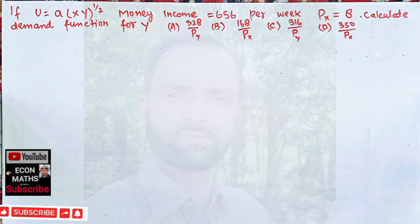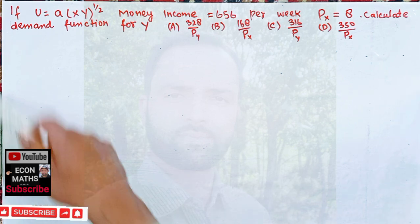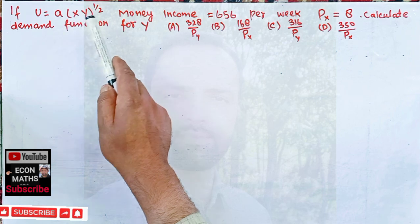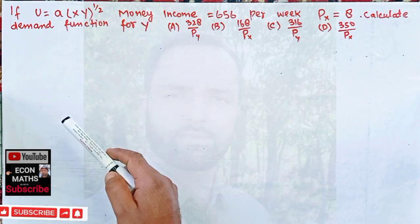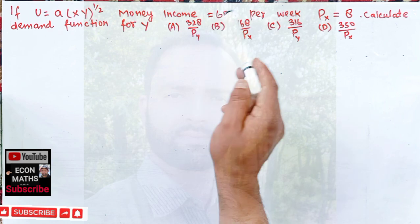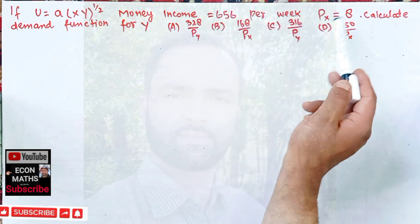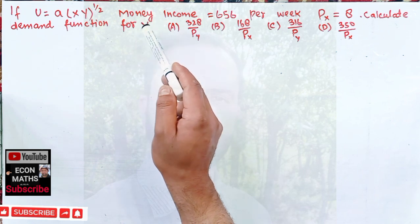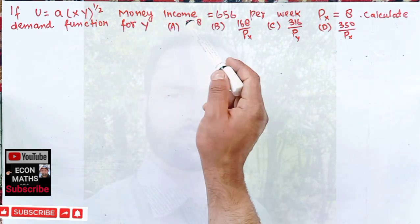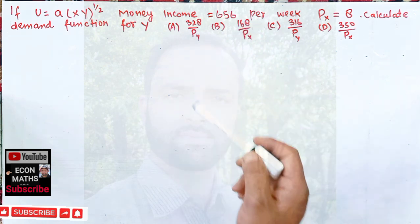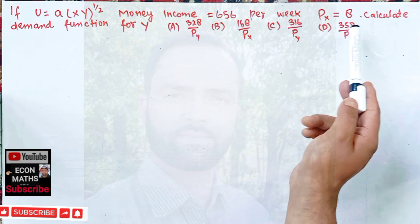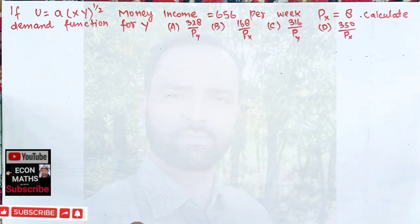In this video we will learn how to find the demand function of a good. The question is: if utility is given as a times X into Y whole power 1 by 2, money income is given as 656 per week, price of X is given as 8, calculate the demand function for Y. The options are: 328 divided by price of Y, 160 divided by price of X, 160 divided by price of Y, or 350 divided by price of X.